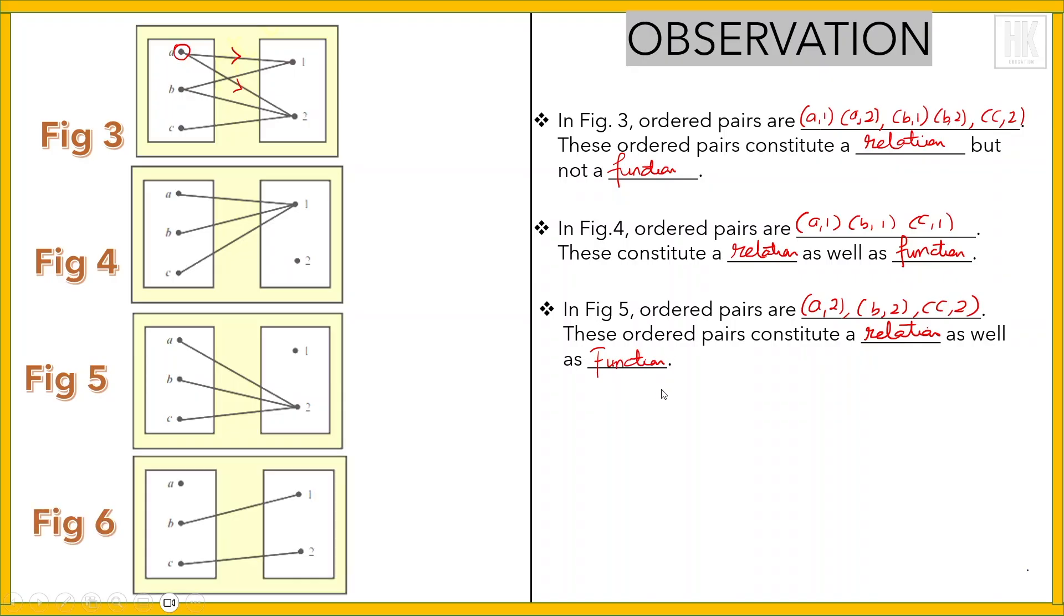Now in figure 6, the ordered pairs are (b,1) and (c,2). These ordered pairs do not represent a function.